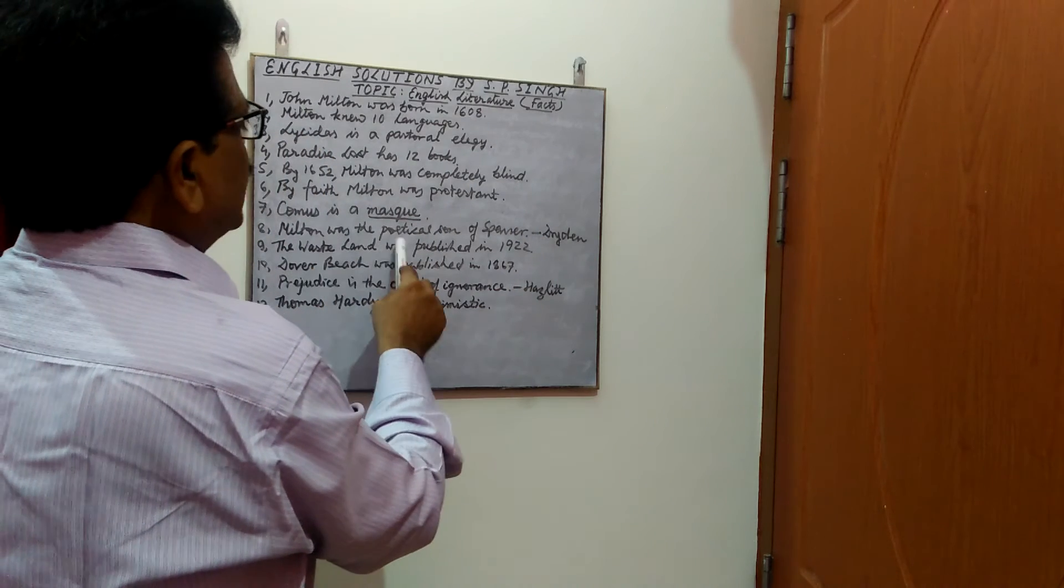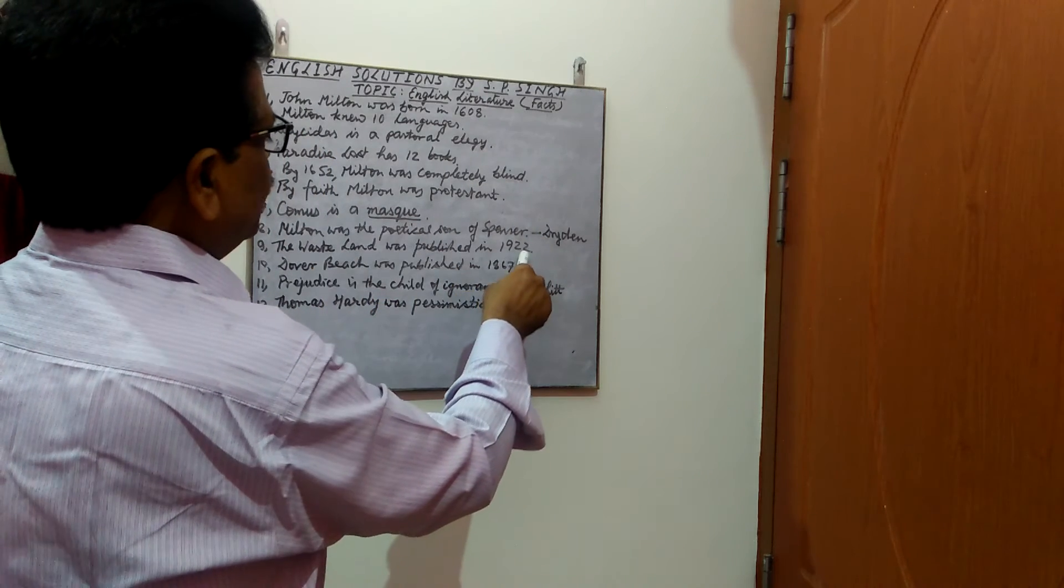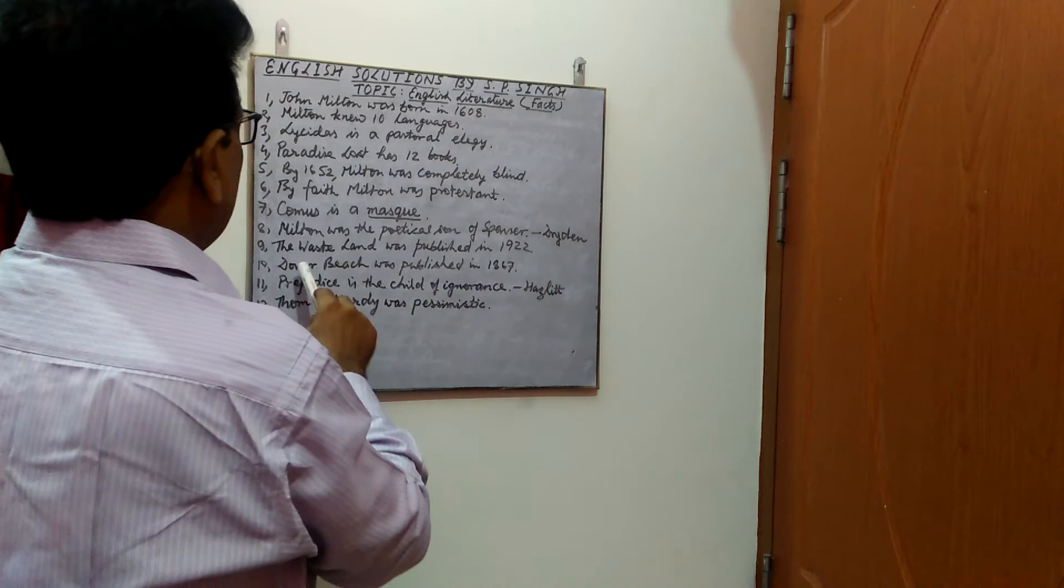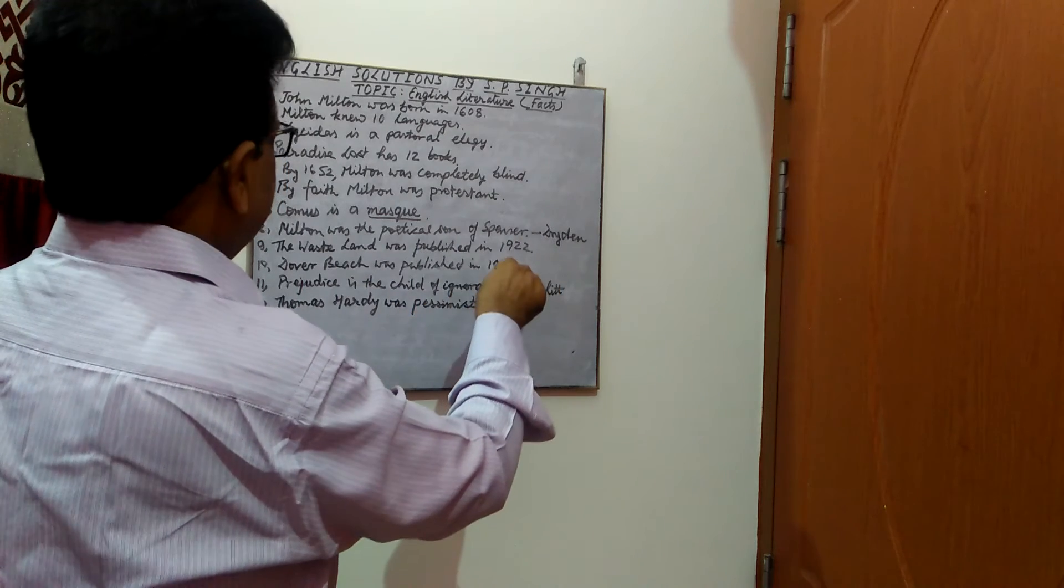Next, The Wasteland was published in the year 1922. Very important date. Then, Dover Beach was published in the year 1867.